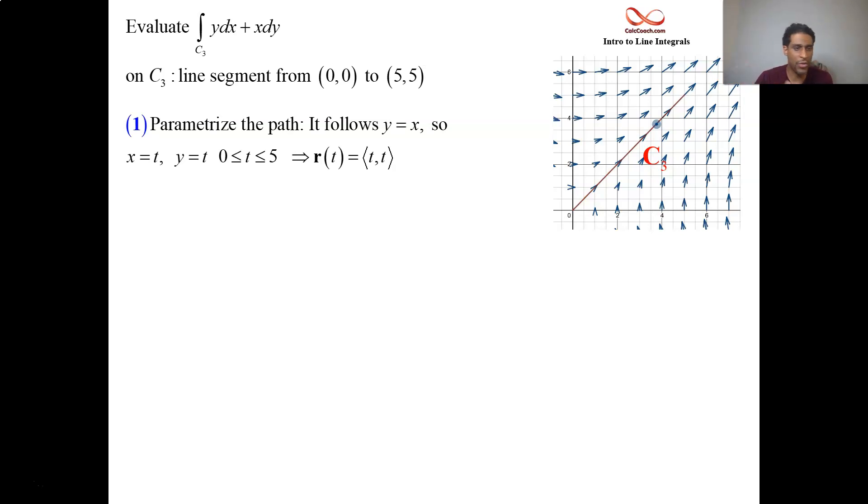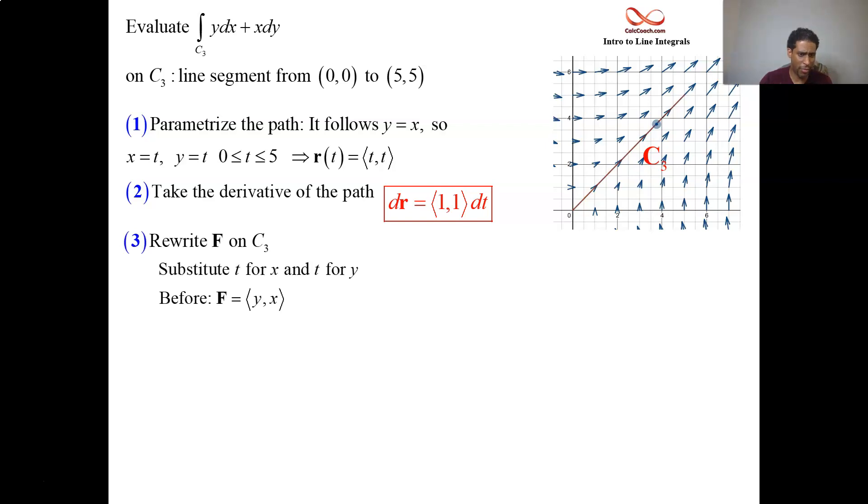What does x do or y? They go from 0 to 5, so t should also go from 0 to 5. So you did it. That's your parameterization. One parameterization, that's all you need. Step two, we take a derivative of this path. It's 1,1. Step three, in your function, your vector function f, remember it's the same f from before, y and x. How do you look at it and know what the f is? Whoever's times dx is the i component. Whoever's times dy is the j component.